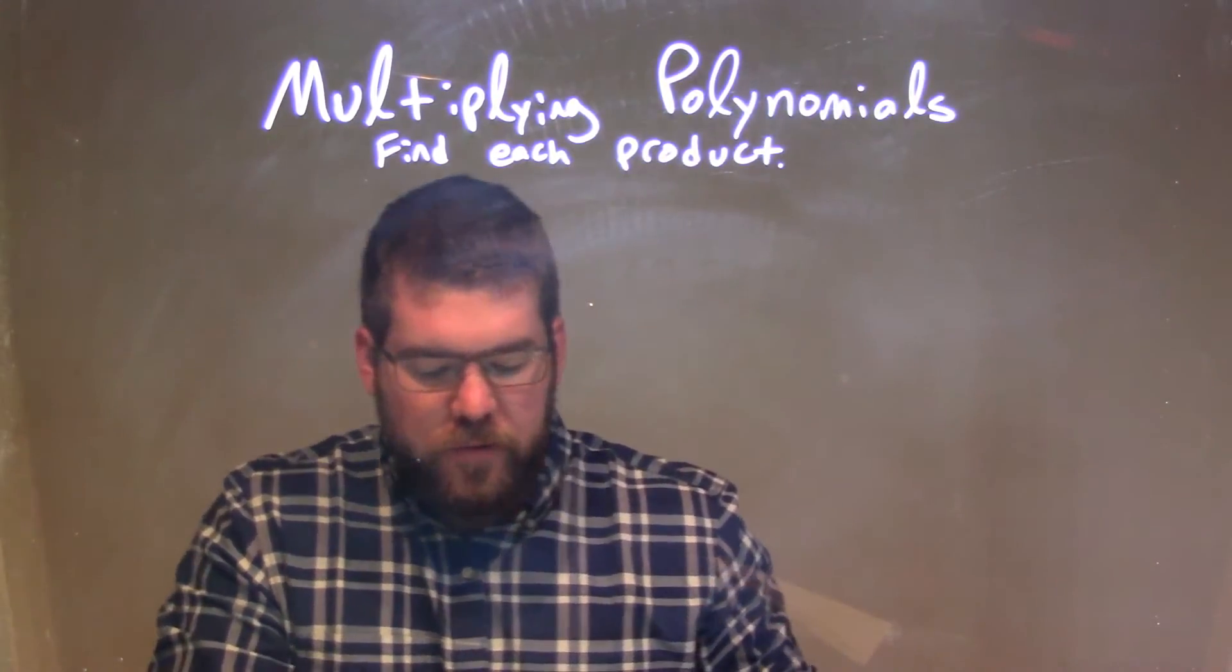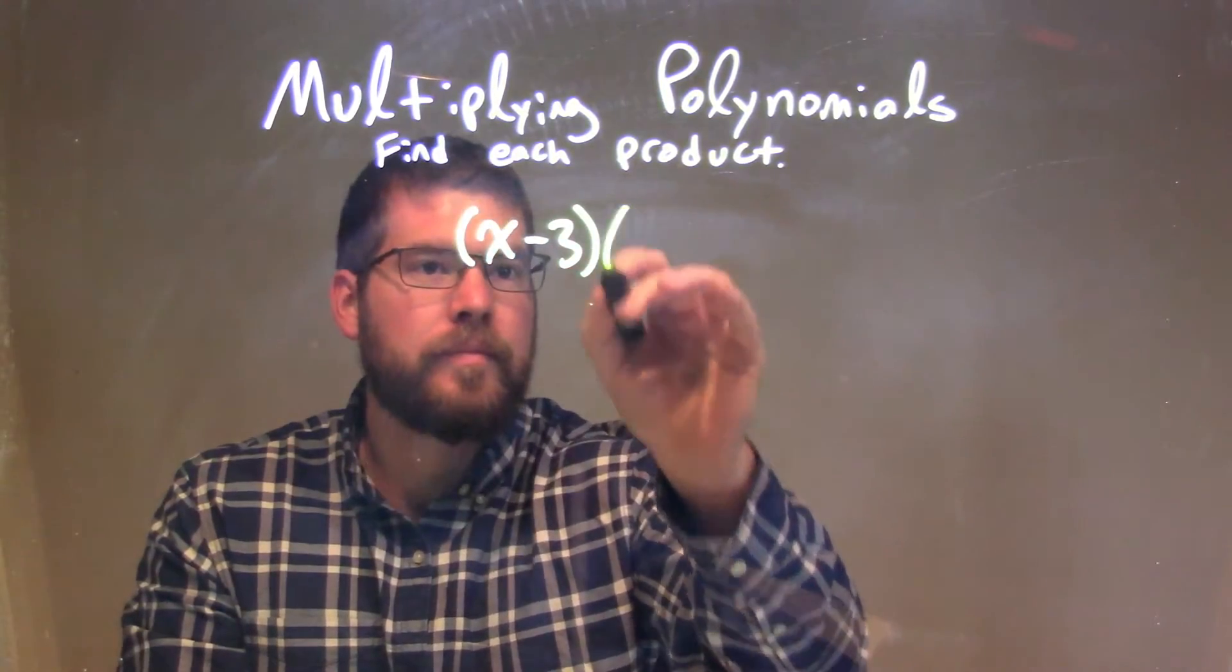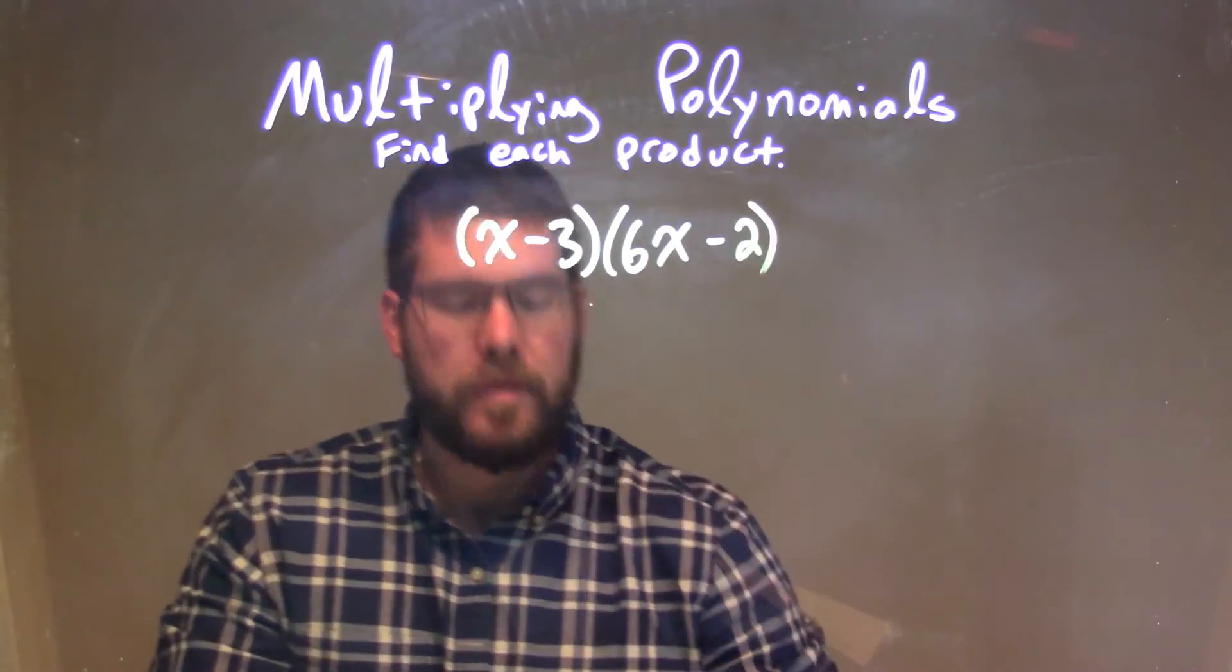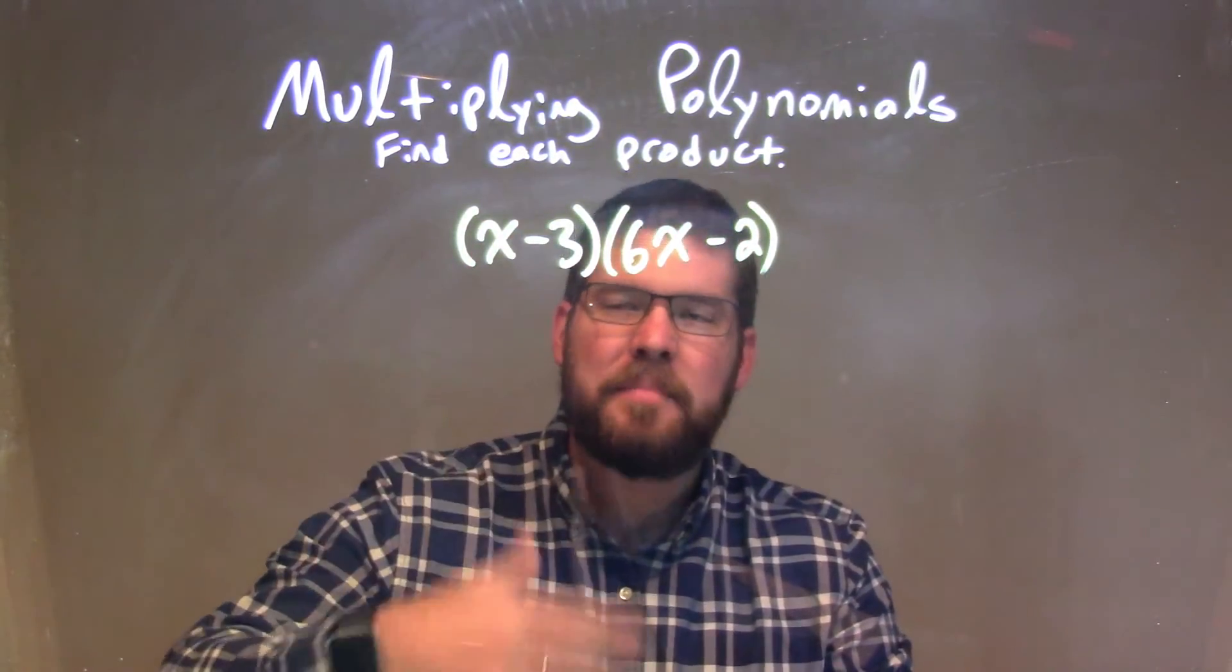So if I was given this problem, x minus 3 times 6x minus 2. So we look at both parentheses. Can we simplify within them? No.